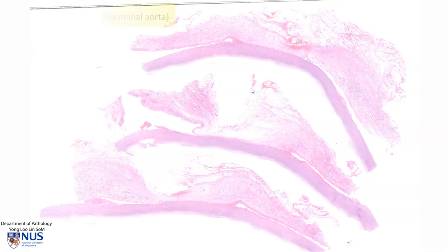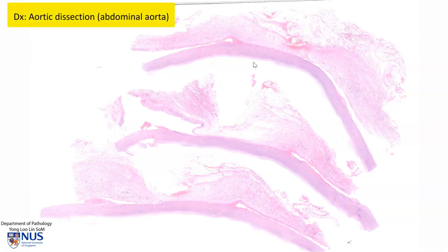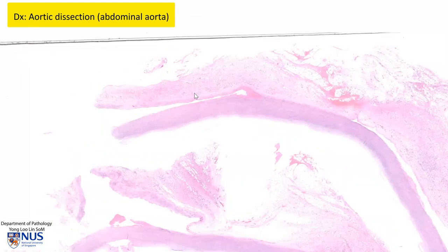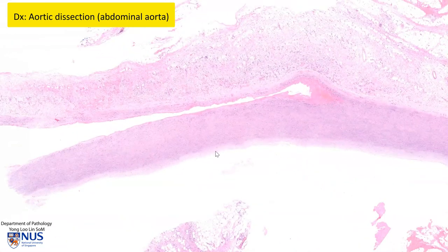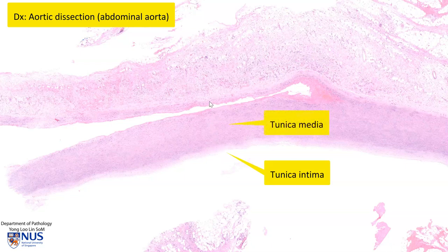Hello, this is a virtual microscopy slide showing three transverse sections from the wall of the abdominal aorta. Let's focus on this one here. To orientate ourselves, this is the tunica intima, this pink layer is the tunica media, and this is the tunica adventitia.